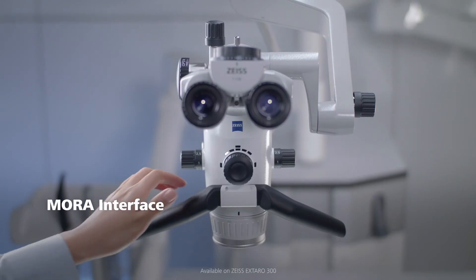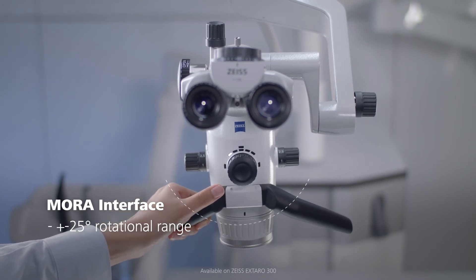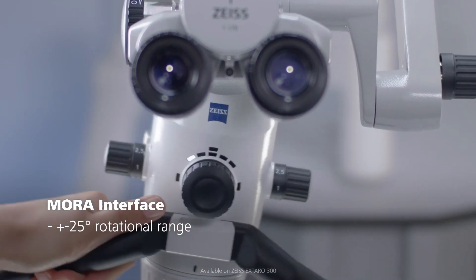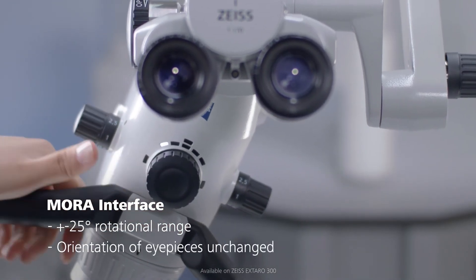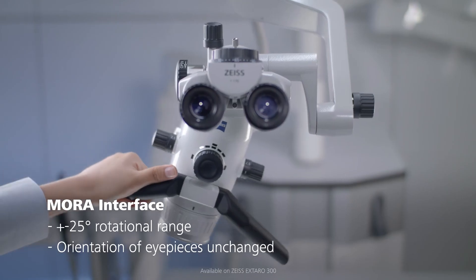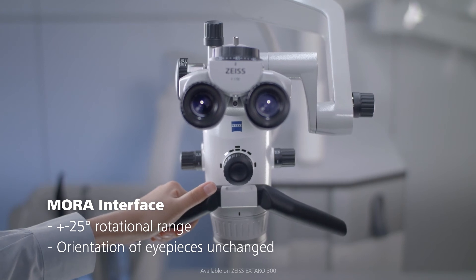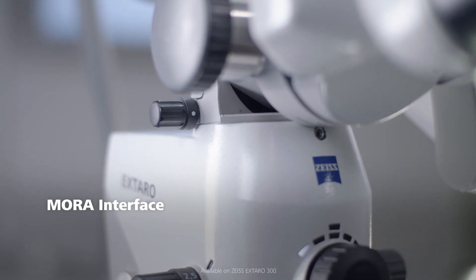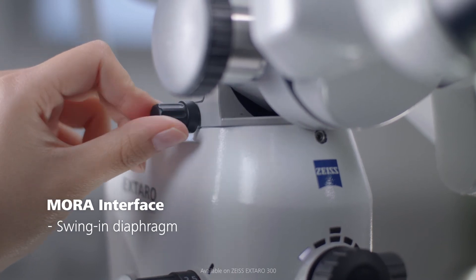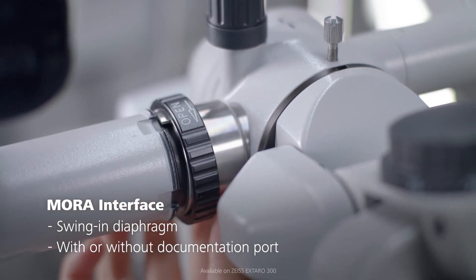The MORA interface offers a rotatable coupling system for the microscope body with plus minus 25 degrees rotational range, which enables you to change the angle of observation without changing the orientation of the eyepieces and therefore without requiring you to change your upright ergonomic sitting posture. It also offers an integrated swing-in diaphragm to increase the depth of field. It is available with or without documentation port.